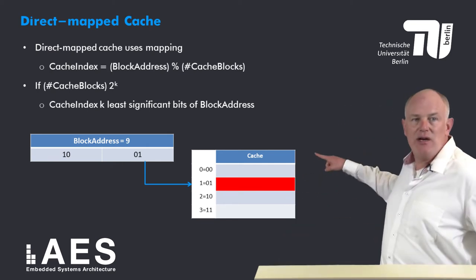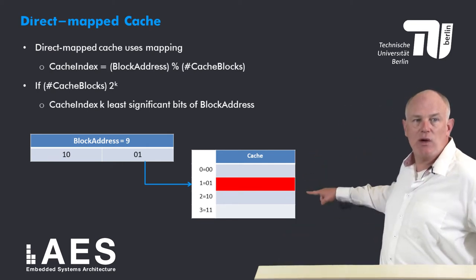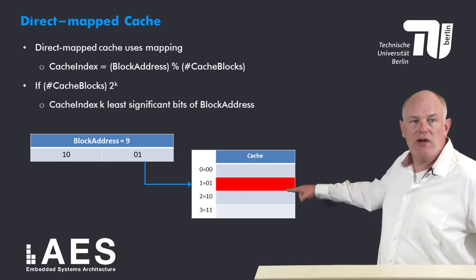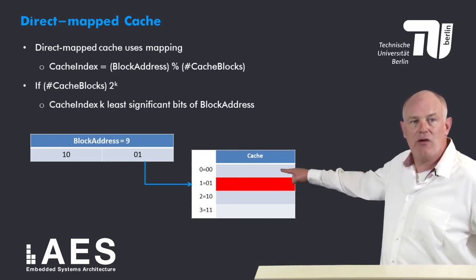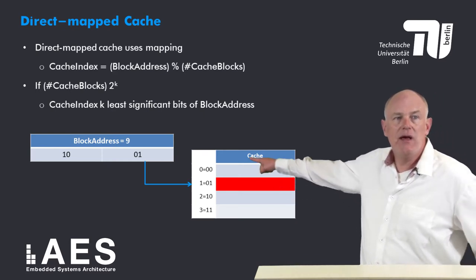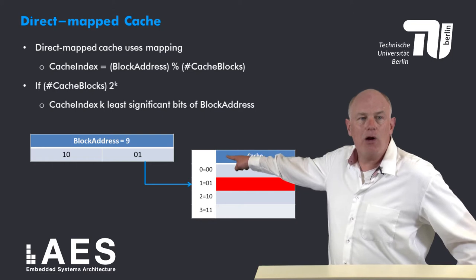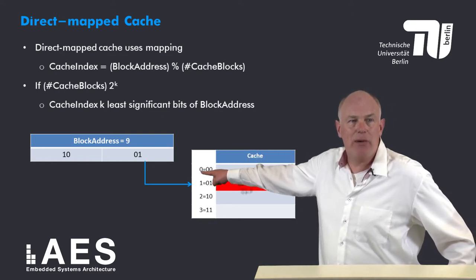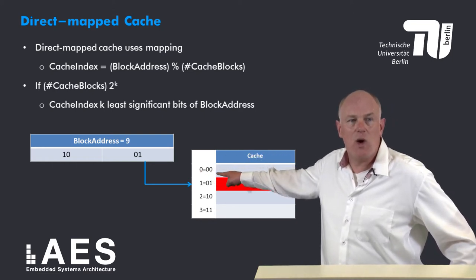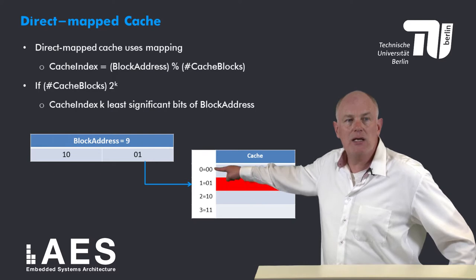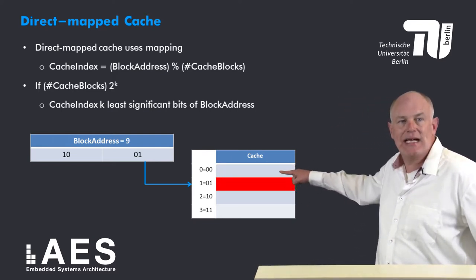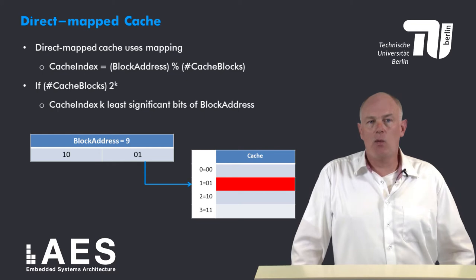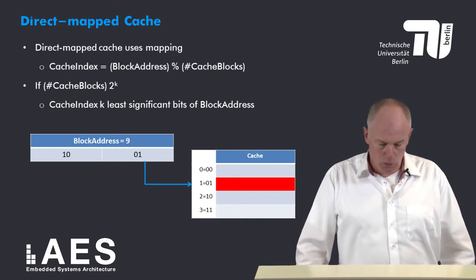Here we have a very small cache with four blocks: 0, 1, 2, and 3, with their binary representations shown. For block address 9, written in binary as 1001, the last two bits are used to index the cache, which is binary 01, decimal 1.